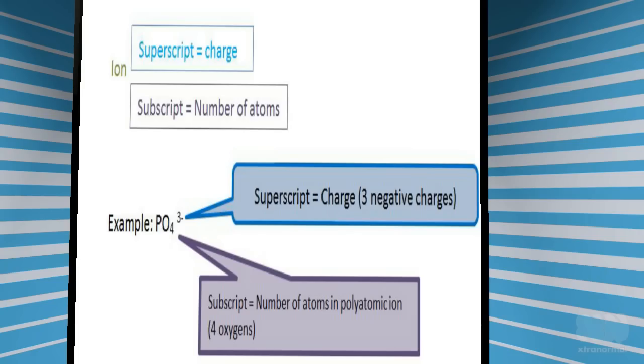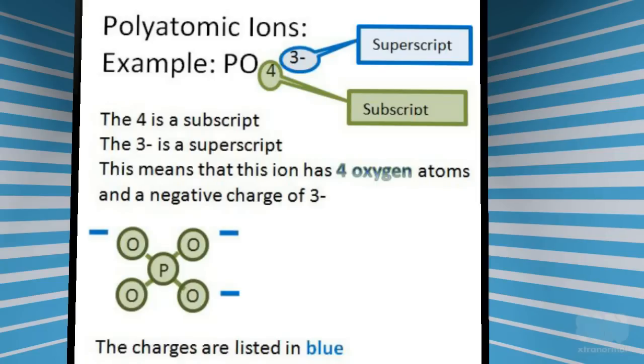Charges are identified by a superscript. Do not get confused by the subscript. If you have polyatomic ions, you will also see subscripts. Subscripts indicate the number of atoms of a particular element in the ion. As an example, the polyatomic phosphate ion consists of one phosphorus atom and four oxygen atoms. This is indicated by the subscript of four. There also is a superscript on this ion, which is three minus. This means that the ion has three negative charges. They are marked in blue.